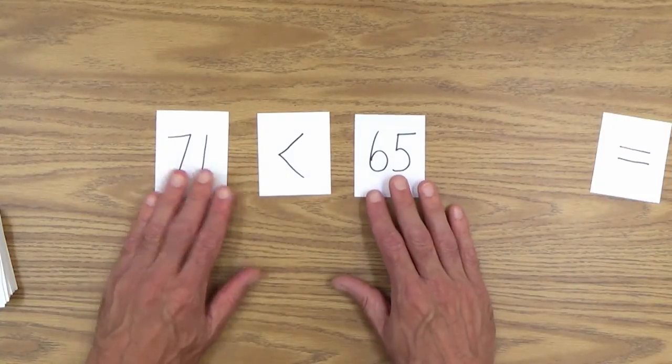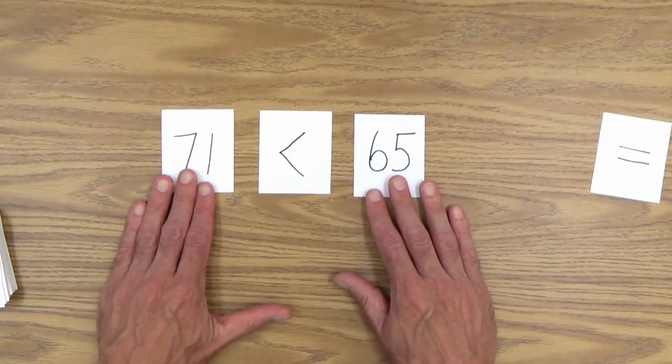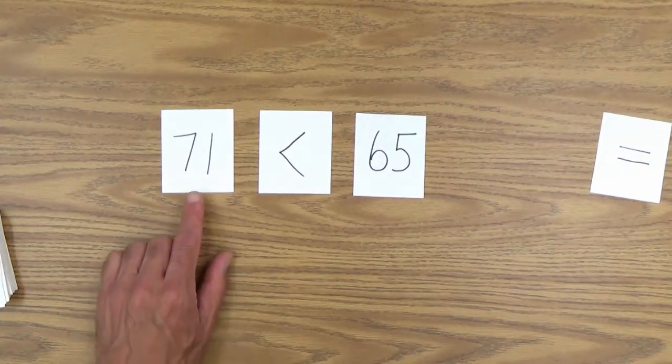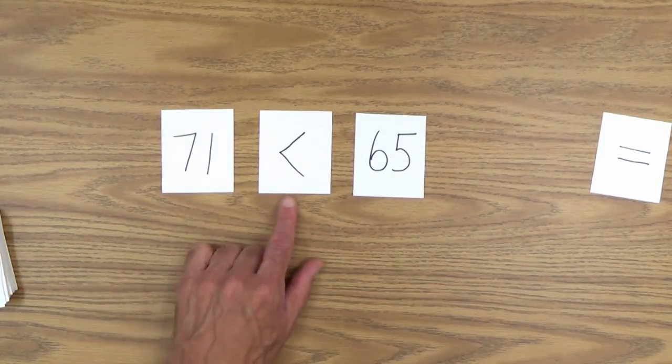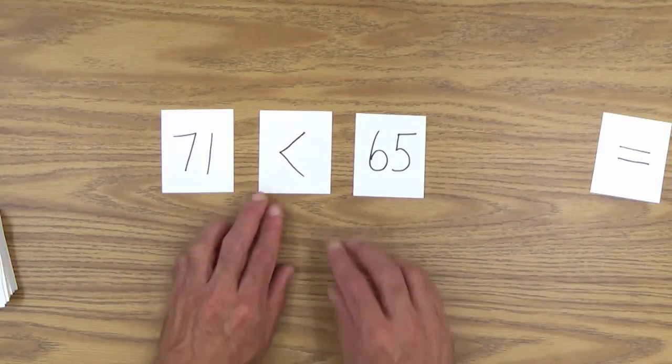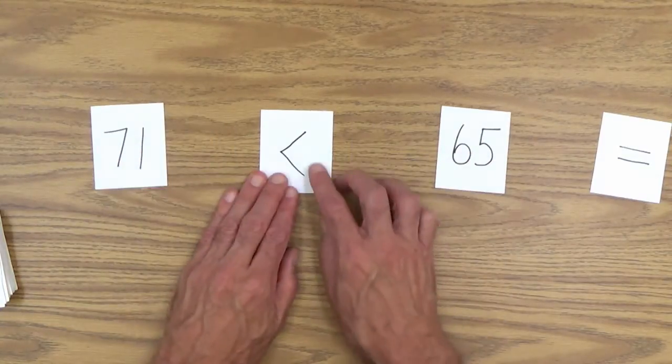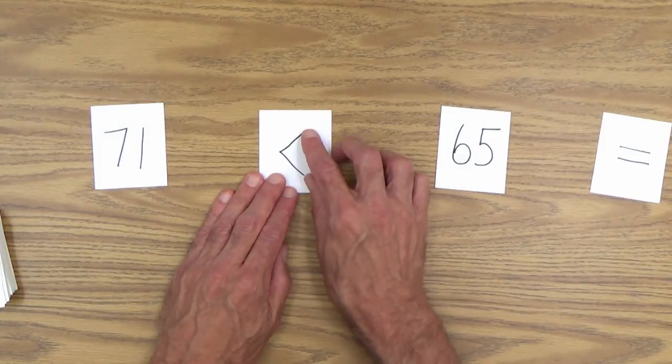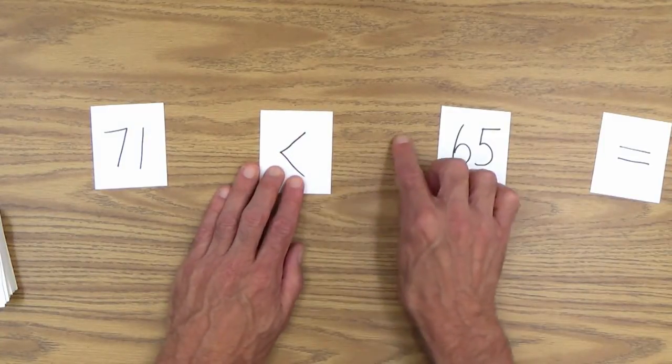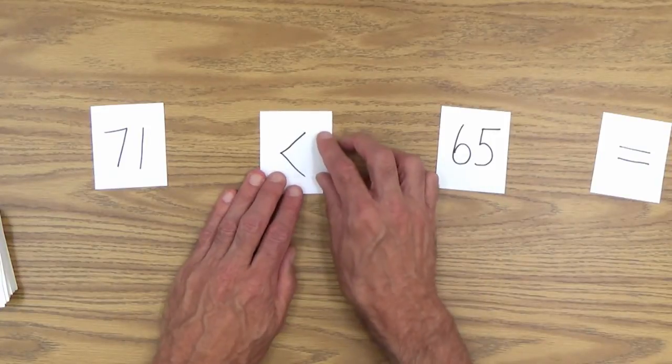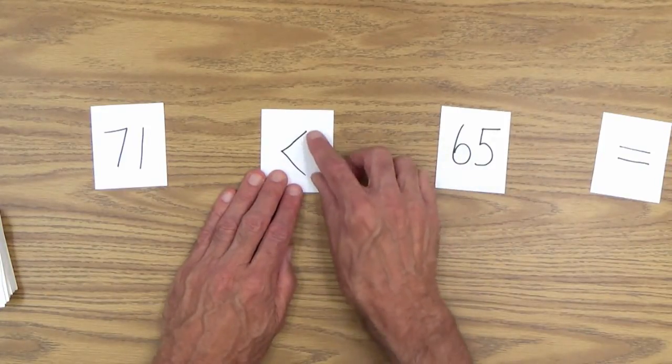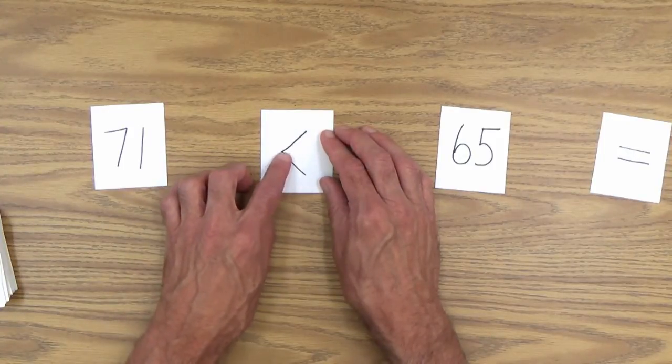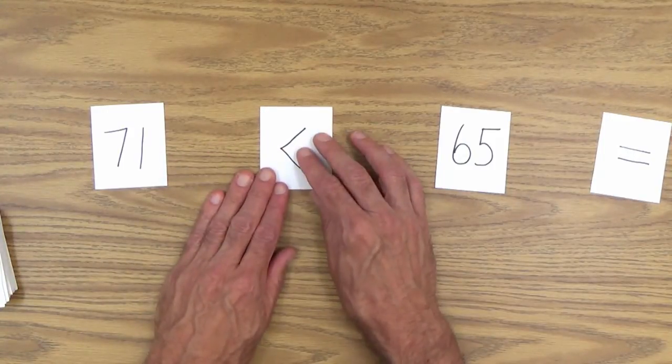And you can show your child how to read these cards by saying is 71 less than 65. And of course, you have to explain to her that you can take these away. This part of this sign will point towards or will be oriented towards the larger number. This part here, the pointer side will be pointing towards the smaller number.